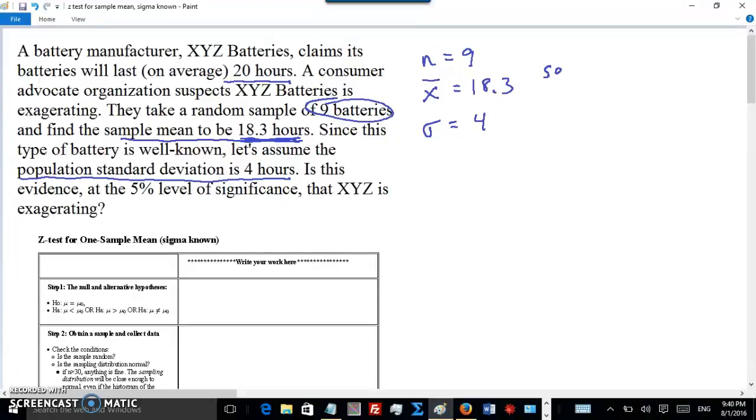Without doing any statistics at all, based on the sample result, there's at least some evidence that the real mean of battery life is lower. But is it solid evidence? Is it strong evidence? The question is, at the 5% level of significance, is it enough evidence or not? So let's go through the steps.